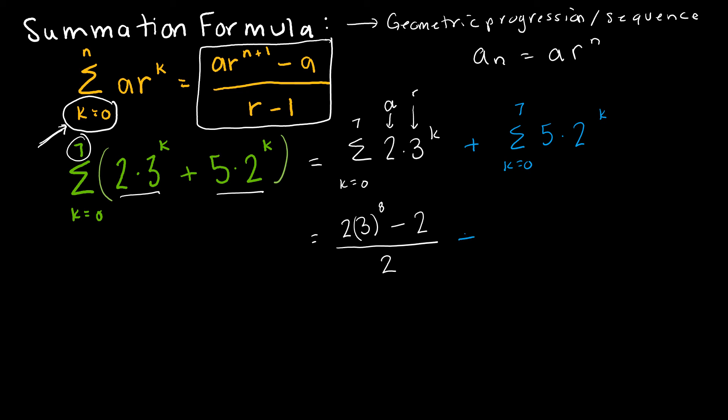For my second summation, a is 5, r is 2. And so I'm going to have a, which is 5, times r, which is 2, to the n plus 1. Again, n is 7, so 7 plus 1 is 8. And then minus a, which was 5, and divide it by r minus 1. And r was 2. So 2 minus 1 is 1.